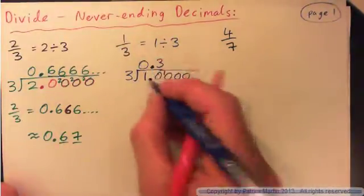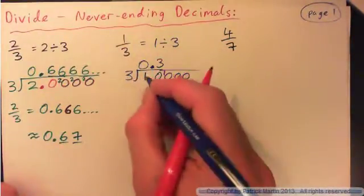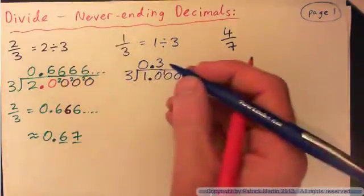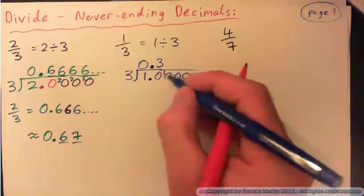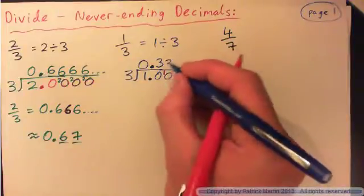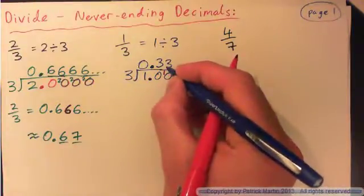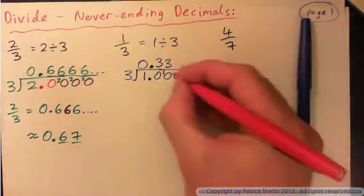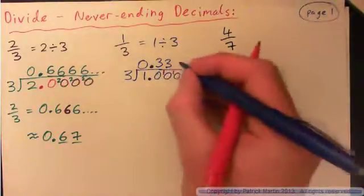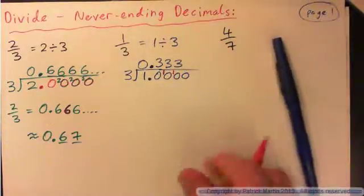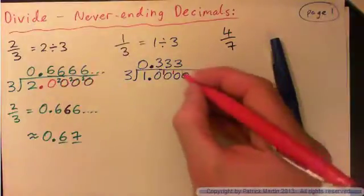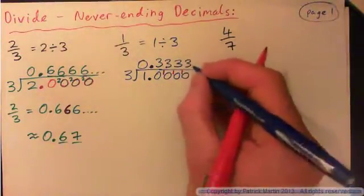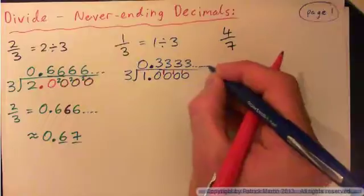So you've got a 0 here — 3 into 1 is 0 times, so you put a 0 there. Now 3 into 10 goes 3 times. 3 times 3 is 9, so the remainder is 1. Then 3 into 10 goes 3 times, remainder 1. 3 into 10 goes 3 times, remainder 1. And so on and so on.